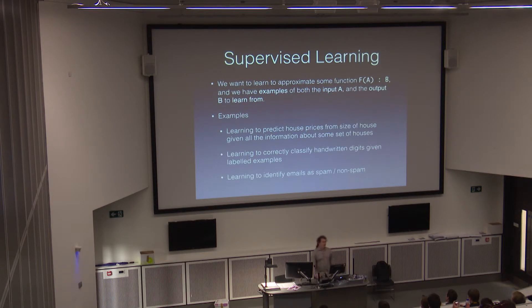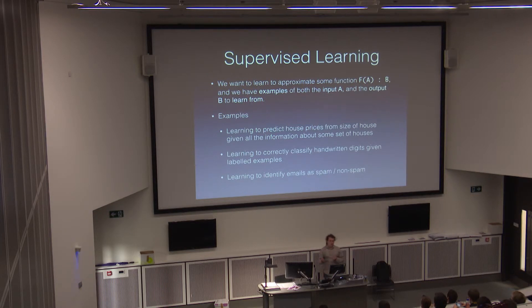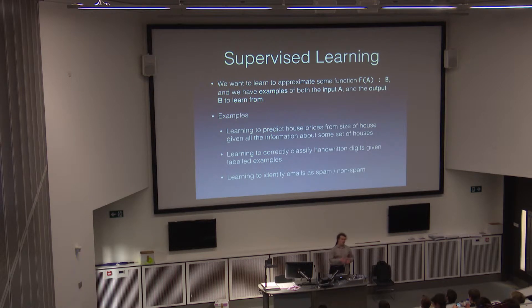The one we're going to be looking at today is supervised learning. That's where we're trying to approximate a function which does something — it goes from one form of input, one type of data which we'll call A, to another B. We have examples of the input to the function and the expected output of it, but not what the function itself is doing. So it could be something like we have a list of the square footage of different houses in an area and their price.